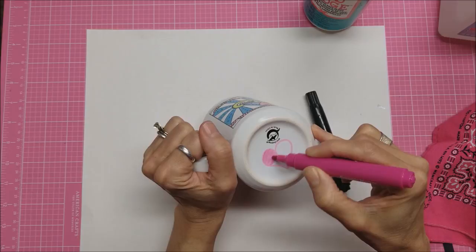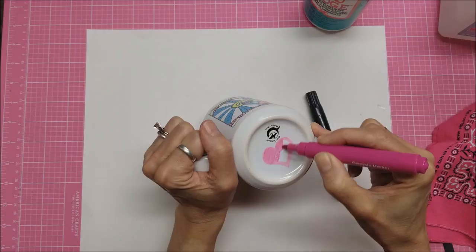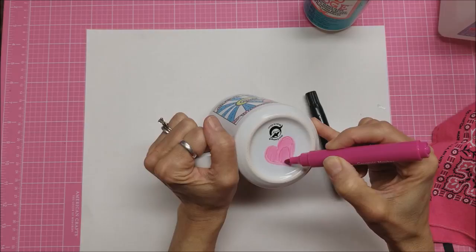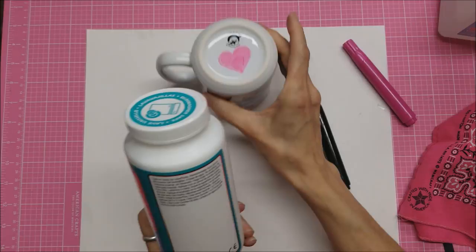Then what I'll do is I will try the Mod Podge dishwasher safe on the bottom and see how that works. It says non-toxic on the dishwasher safe Mod Podge and you can do more than one coat, and I have done that before.